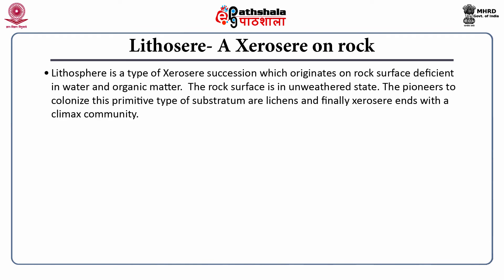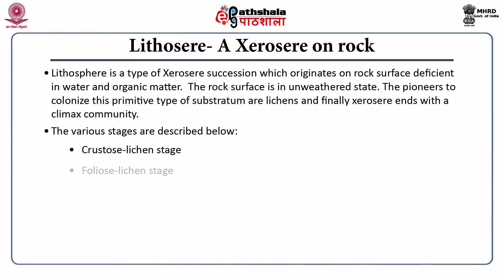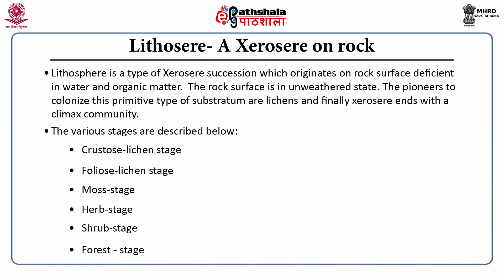Lithosere: a xerosere on rock, or lithosere, is a type of xerosere succession which originates on a rock surface deficient in water and organic matter. The rock surface is in an unweathered state. The pioneers to colonize this primitive substratum are lichens, and finally xerosere ends with a climax community. The various stages of xerosere succession are: crustose lichen stage, foliose lichen stage, moss stage, herb stage, shrub stage, and forest stage.